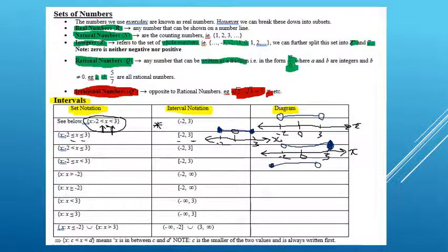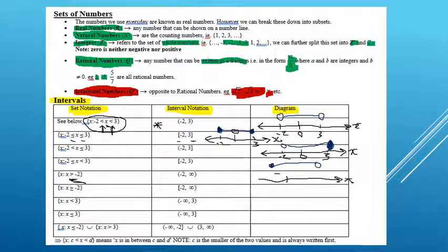This set says x is greater than negative 2. In the interval notation, it's a round bracket at negative 2 because it's not equal to it — it's just greater than negative 2. Any number greater than negative 2 goes up to infinity. So on the number line, we have an open circle at negative 2 and an arrow going out to the right, indicating it keeps going up to positive infinity.